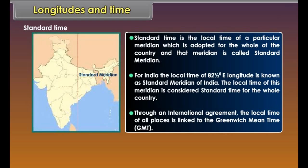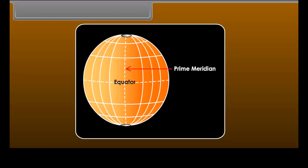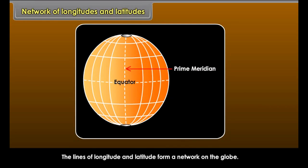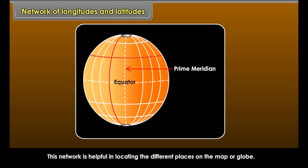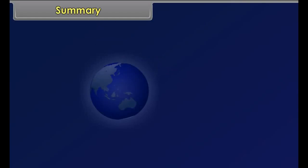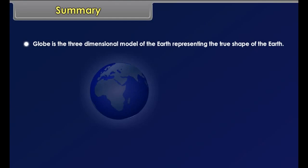All the places located on the same meridian, irrespective of their distances, will have the same local time. Places situated east or west of the meridian will have different local times. Standard time is the local time of a particular meridian which is adopted for the whole country, and that meridian is called the standard meridian. For India, the local time of 82 and a half degrees east longitude is the standard meridian of India. Through an international agreement, the local time of all places is linked to Greenwich Mean Time (GMT).